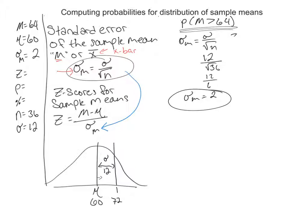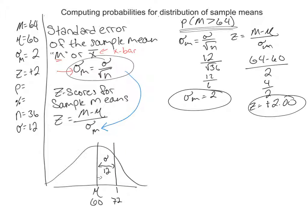So now let's go into our z. Our z equals mean minus mu divided by the estimated standard error of the mean. So we have 64 minus 60 divided by 2. So 4 divided by 2. So we have a z-score of positive 2.00. That's a really high z-score.